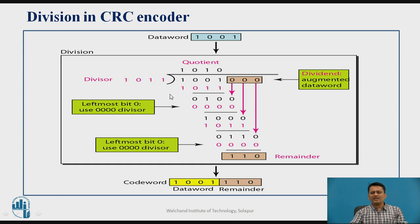So this 1 XOR gives 0, and doing the XOR operation I get the partial remainder 0, 1, 0. I bring down one bit from the appended zeros. Now the most significant bit is 0, so the quotient is 0 and I use 0, 0, 0 as the divisor row. Again doing the mod-2 operation, the next most significant bit is 1, so quotient is 1 and I write the divisor. After the mod-2 subtraction I get the result and finally the remainder is 1, 1, 0.